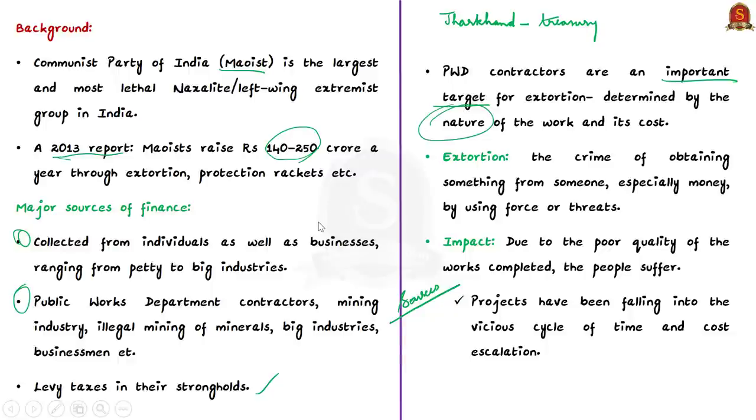Now, let us see the darker side of extortion. As all the actors involved get a share of the pie, everyone is happy and this refers to the contractors, the Maoists and the public servants. Eventually, due to the poor quality of the works completed, it is the people who suffer at the end. Also, in the affected areas, because of these extortion and corruption, the projects have been falling into the vicious cycle of time and cost escalation. And today's article is also one such case. Wherein, a coal businessman in Jharkhand was forced to pay extortion money to the Tritiya Prastuti Committee, which is a splinter group of the Communist Party of India. And so, he was charged with the funding of terror and now the Supreme Court has freed him.